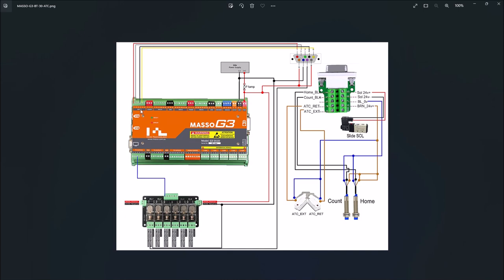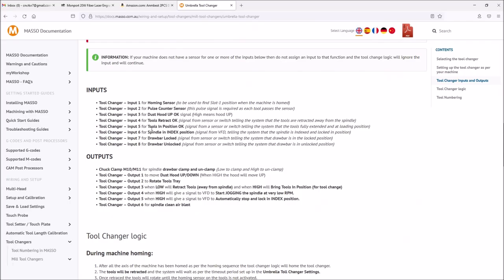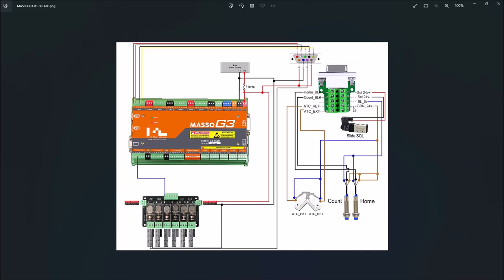Input four for retract and input five for tool in position or extended. And then next we have our counter and our home sensors. These are different. The brown here is the 24 volts and the blue is our zero volts, and these are three wire sensors. The black is actually our signal wire, and we have them going to pin one for our home sensor and pin two for our counter, which go to one and two on our DB9 and then come over to inputs one and two on the Masso G3. Pretty simple and straightforward on the wiring for the Masso G3.